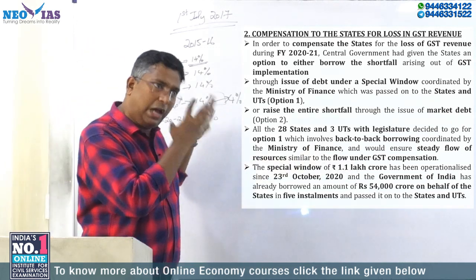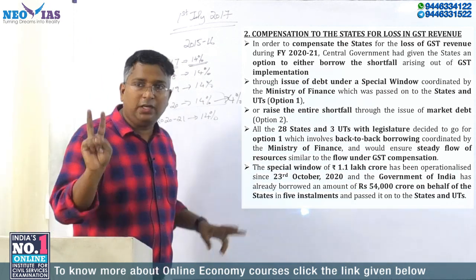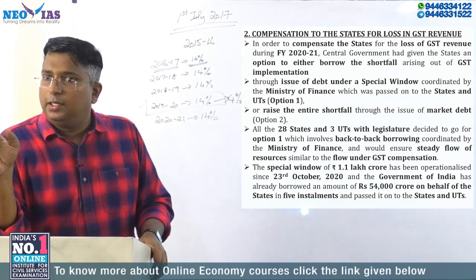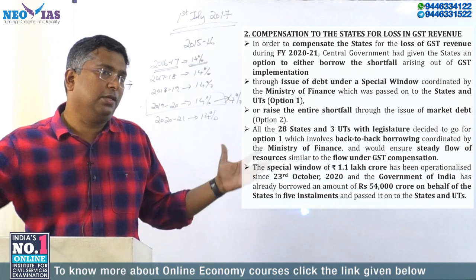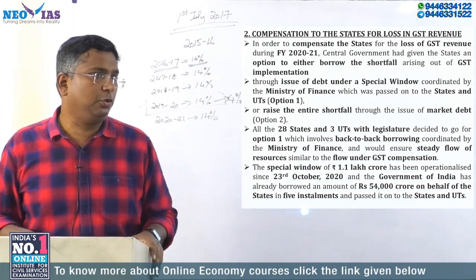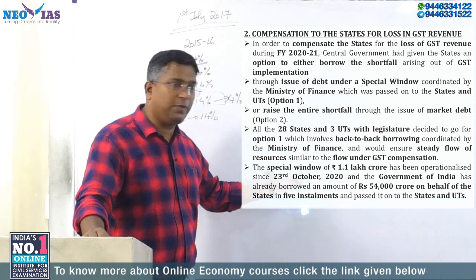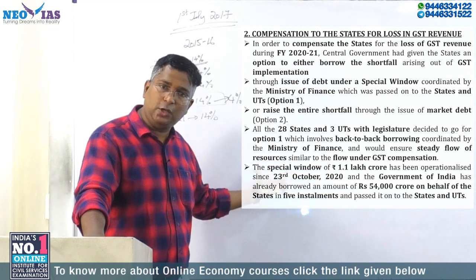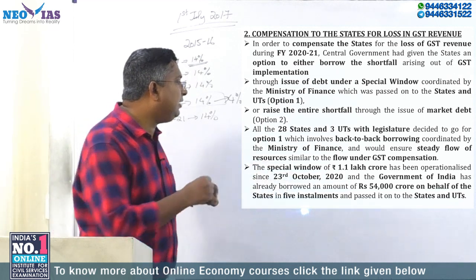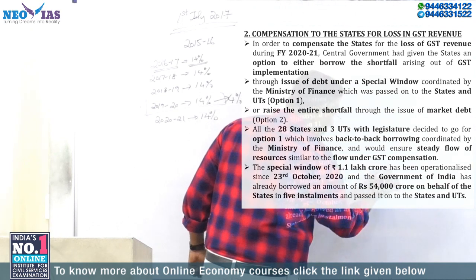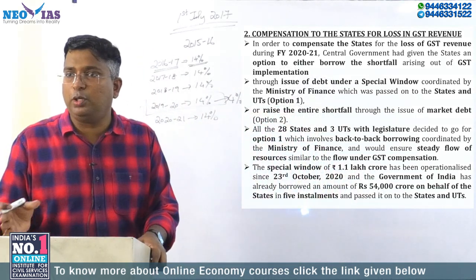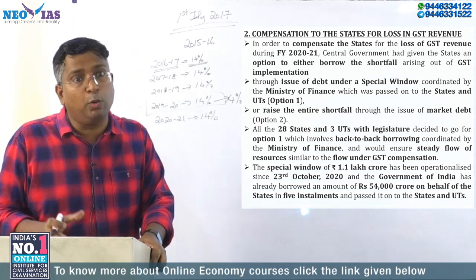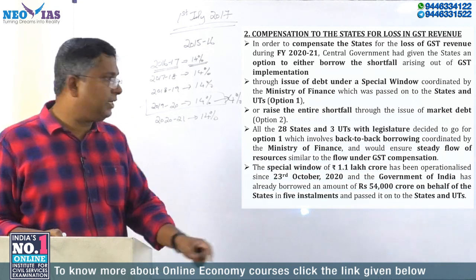Just have an idea of what is in the Economic Survey. Option one is the special window. Option two — there is no need to discuss because no state is following option two. Under option one, which we call the special window, for all 28 states and 3 union territories with legislature, the center will borrow for the financial year 2020-21. The total amount the center will borrow to meet the GST shortfall is Rs. 1.1 lakh crore.